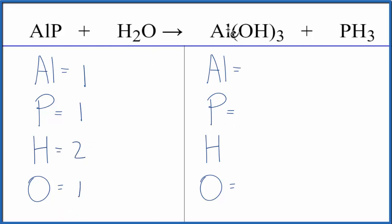On the product side of the equation, we have 1 aluminum, 1 phosphorus, and then for hydrogens, we have 1 here, but this 3 applies to everything in parentheses, so we have 3 times 1, that's 3, plus these 3 here, so we have a total of 6 hydrogen atoms.